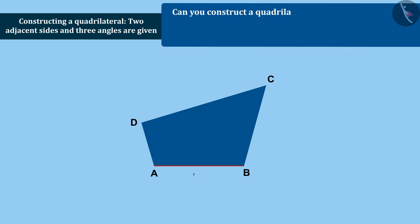BC equals 5.5 centimeters, angle A equals 105 degrees, angle B equals 125 degrees, and angle D equals 135 degrees.